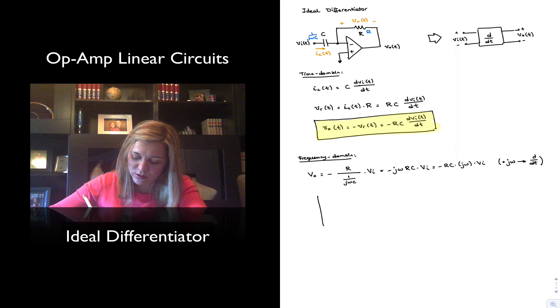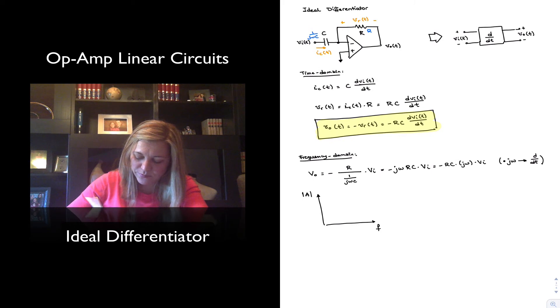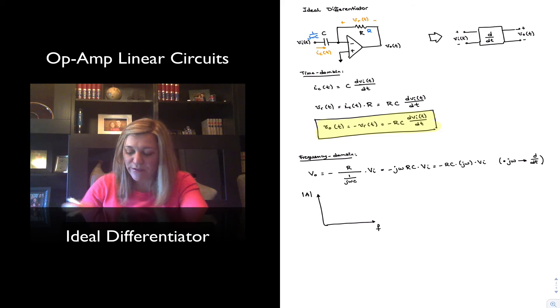If I were to plot the magnitude response of this transfer function as a function of frequency, a being the ratio of Vout over Vin, I will get that it is proportional to ω or proportional to f, and so basically something that is a straight line.